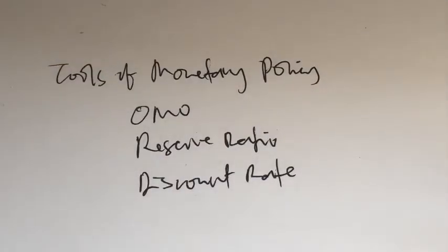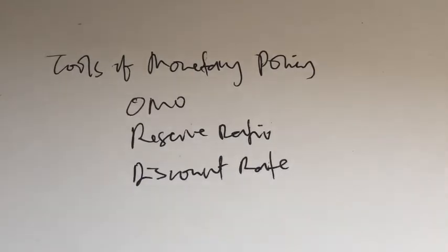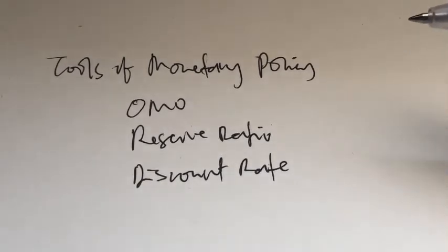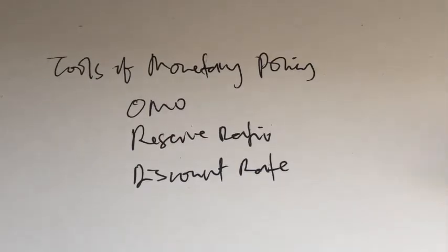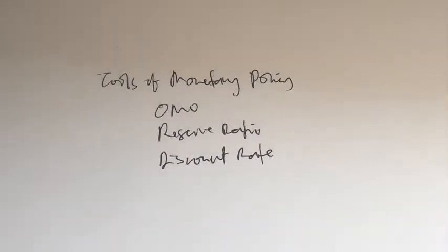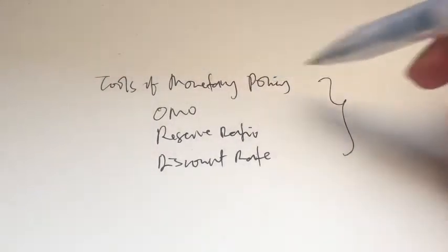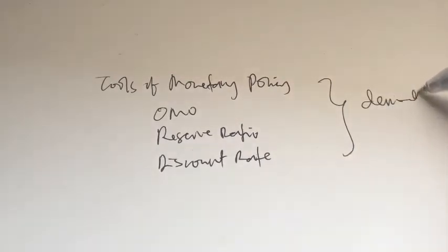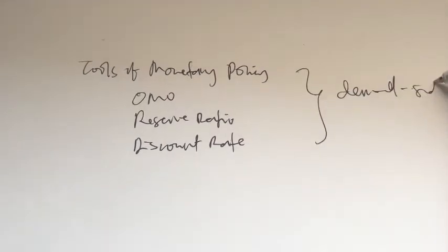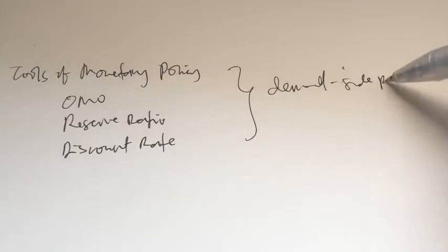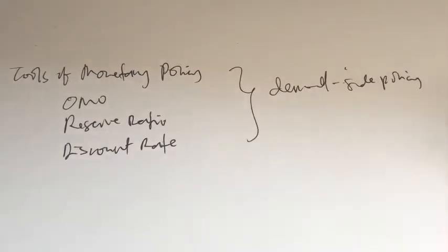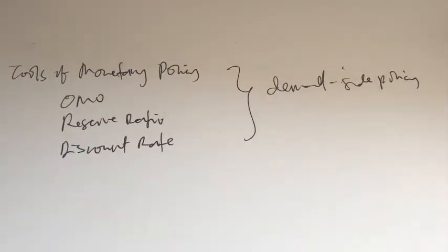As mentioned at the beginning of our lectures, monetary policy is one of the demand-side policies we learned in this course. The other one was fiscal policy. So how do these tools of monetary policy affect aggregate demand? Monetary policy is a demand-side policy, meaning the government will take actions in order to influence or change aggregate demand.